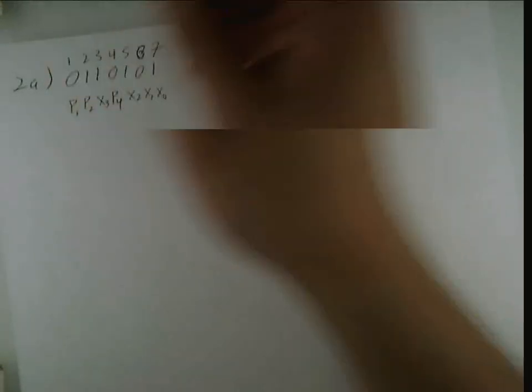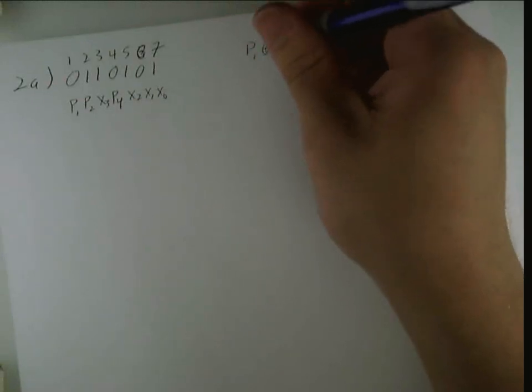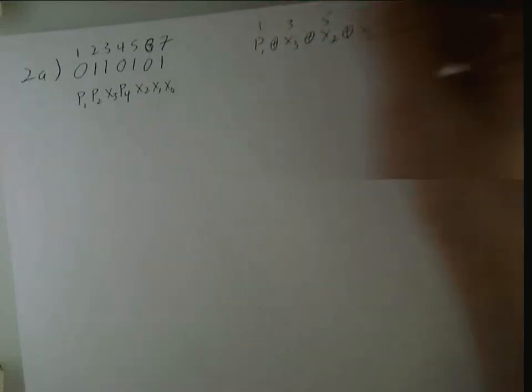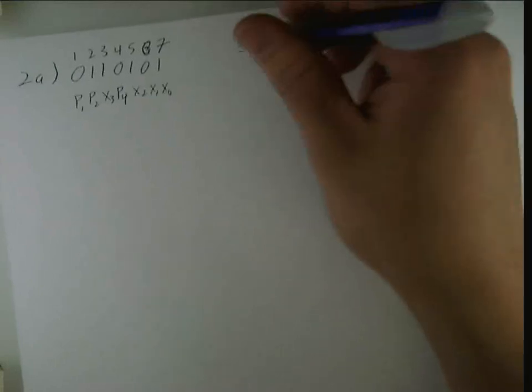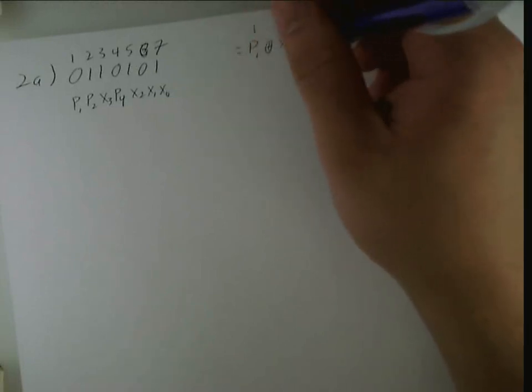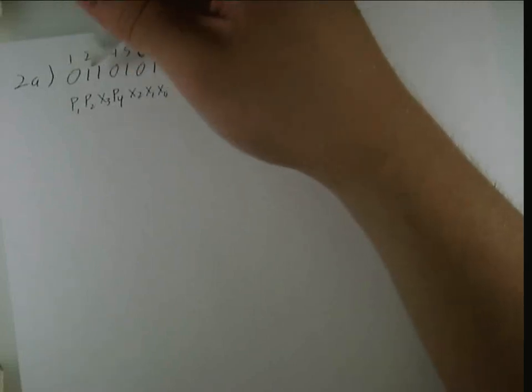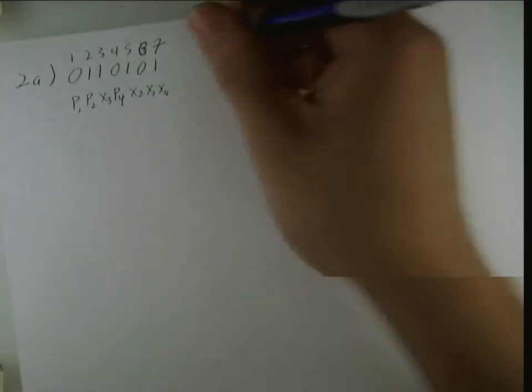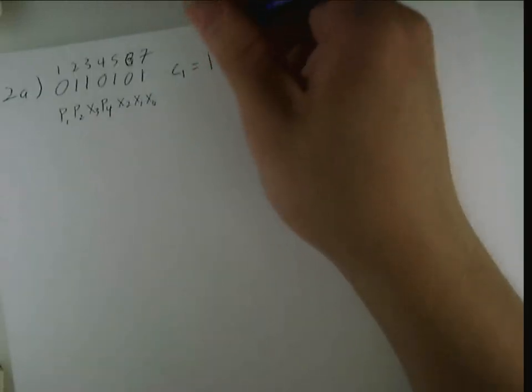So, I'm going to xor p1, x3, xor x2, xor x0, or 1, 3, 5, and 7. And, basically, this will be 0 when the parity is even, which means no error has occurred, or it'll be 1 when the parity is odd. So, when the number of 1's is odd. I have 0 plus 1, 2, and 3, which means that we have an error. So, this is called check 1, c1, we have an error associated with c1.